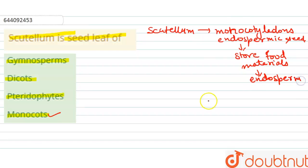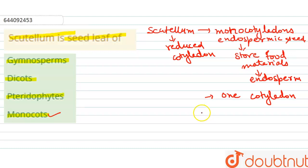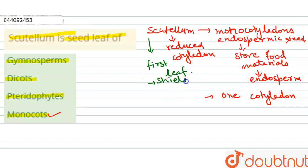Scutellum, in the case of monocots, is the reduced cotyledon. In monocots, there is only one cotyledon, which is why they are called monocotyledons. The scutellum is considered the first leaf of monocots, and it has a shield-like shape.